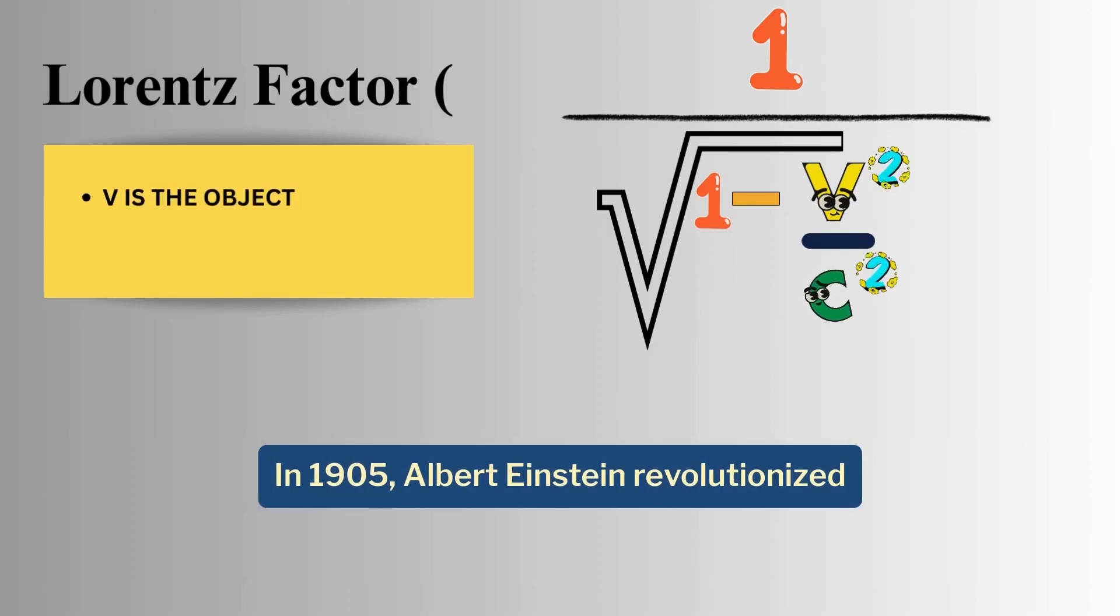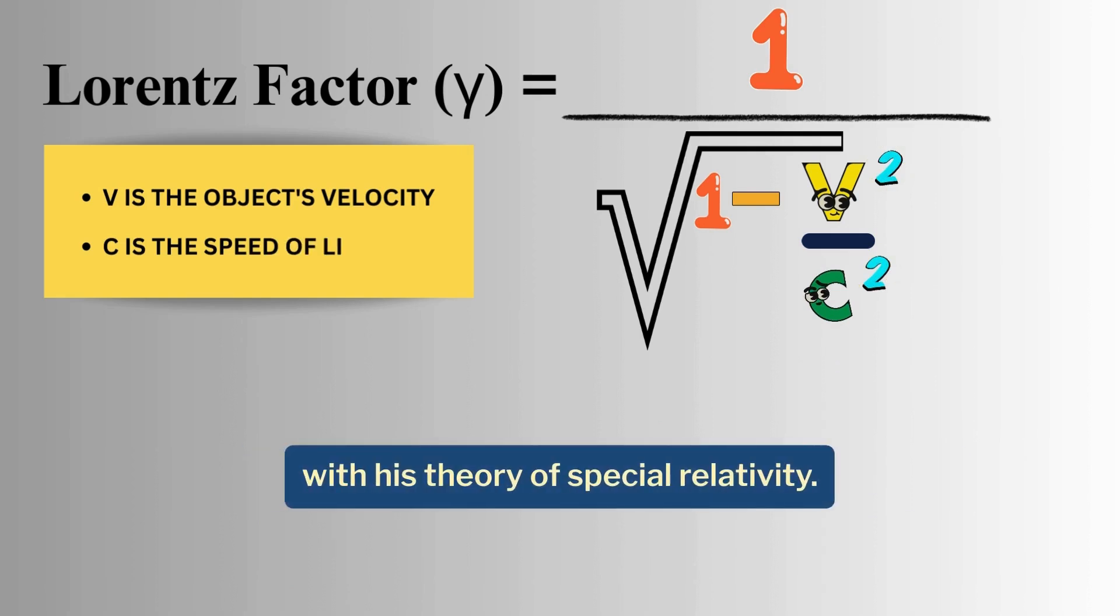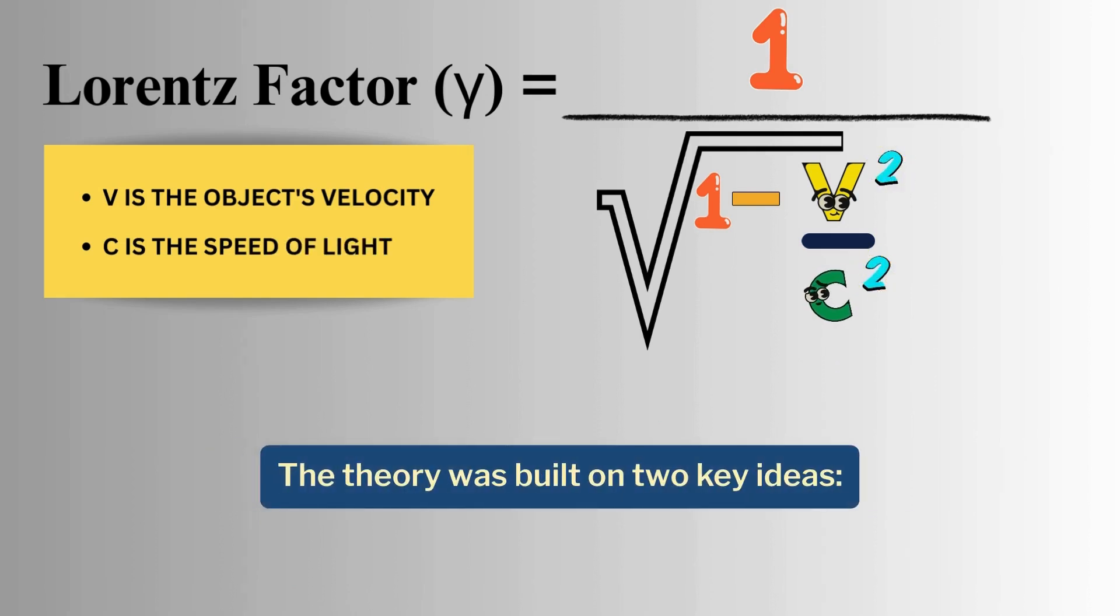In 1905, Albert Einstein revolutionized our understanding of space and time with his theory of special relativity. The theory was built on two key ideas.